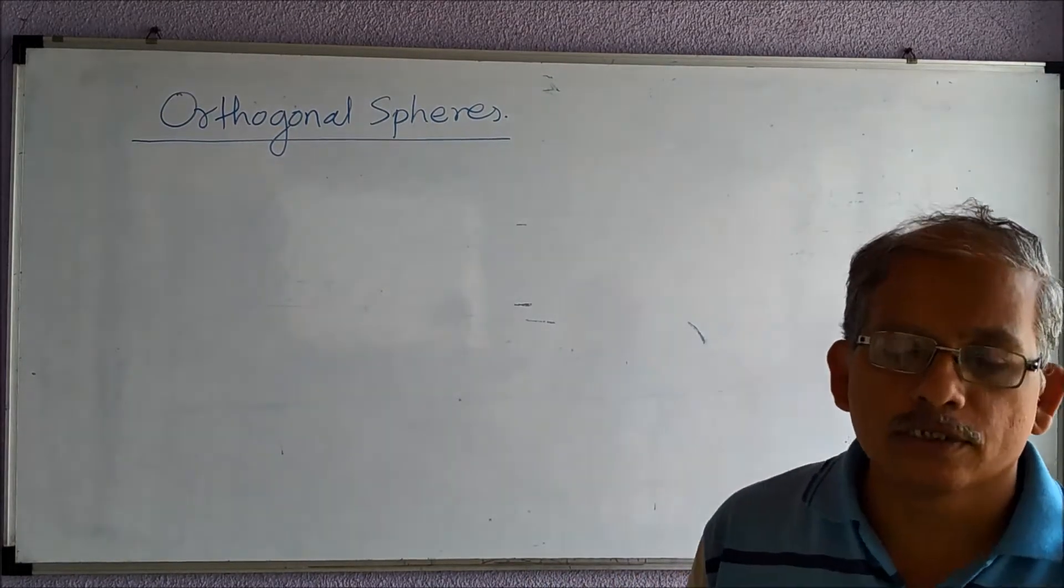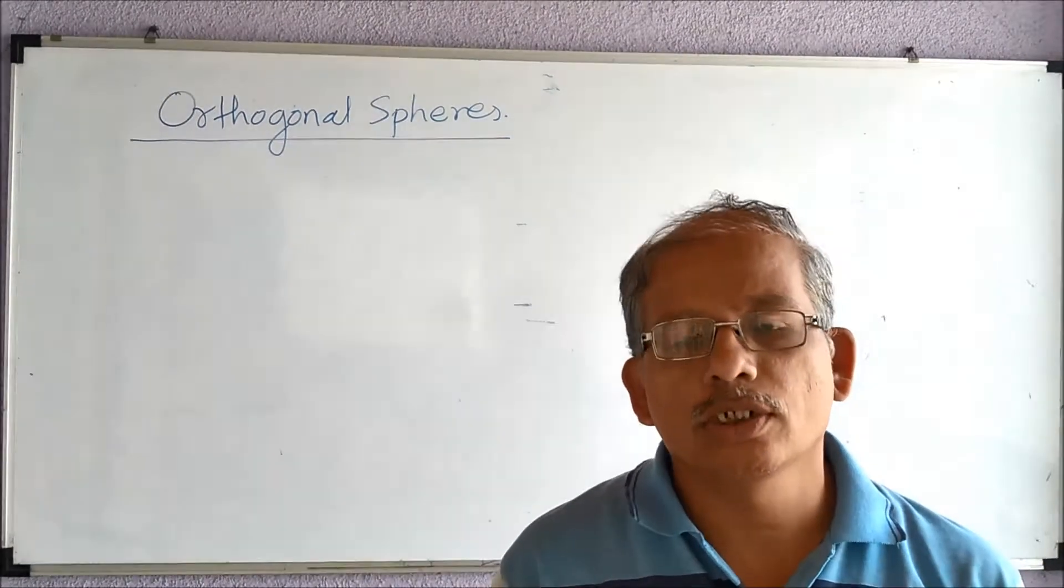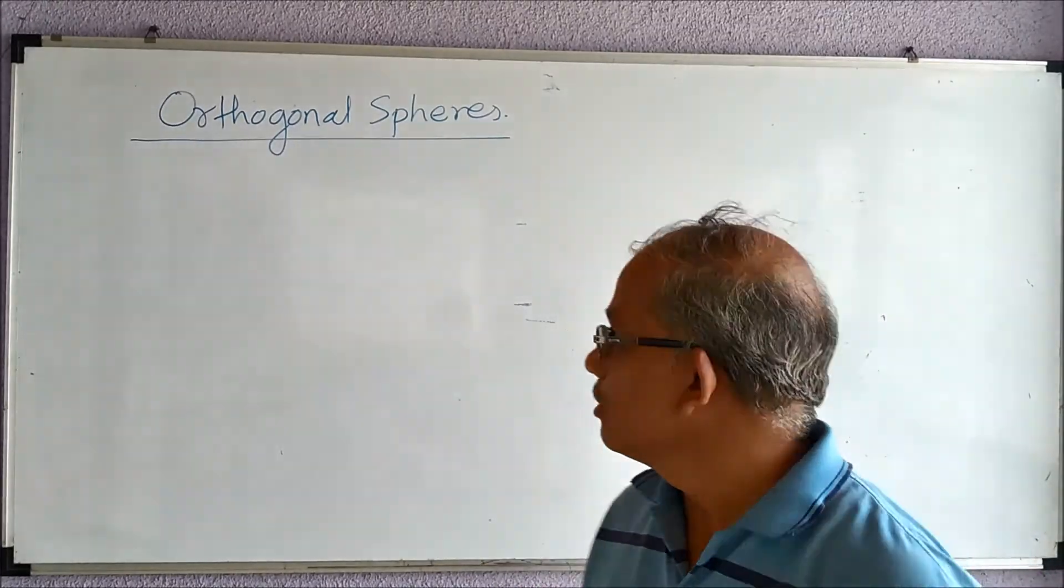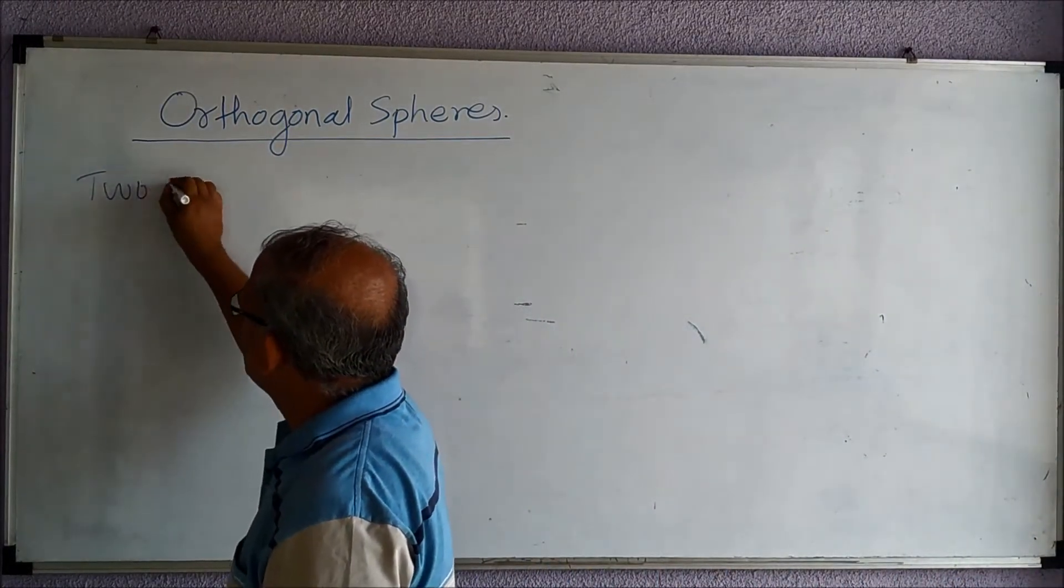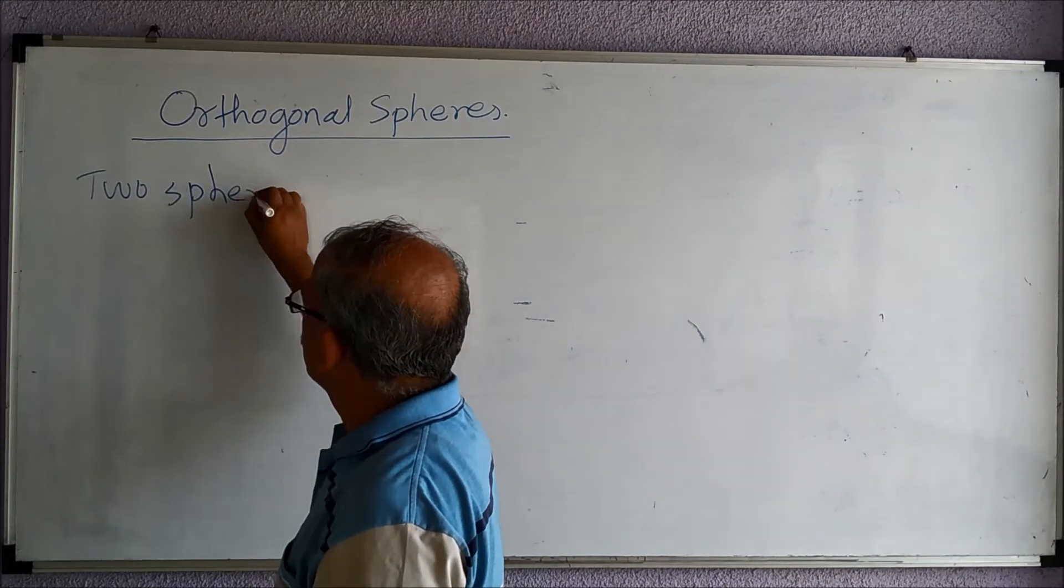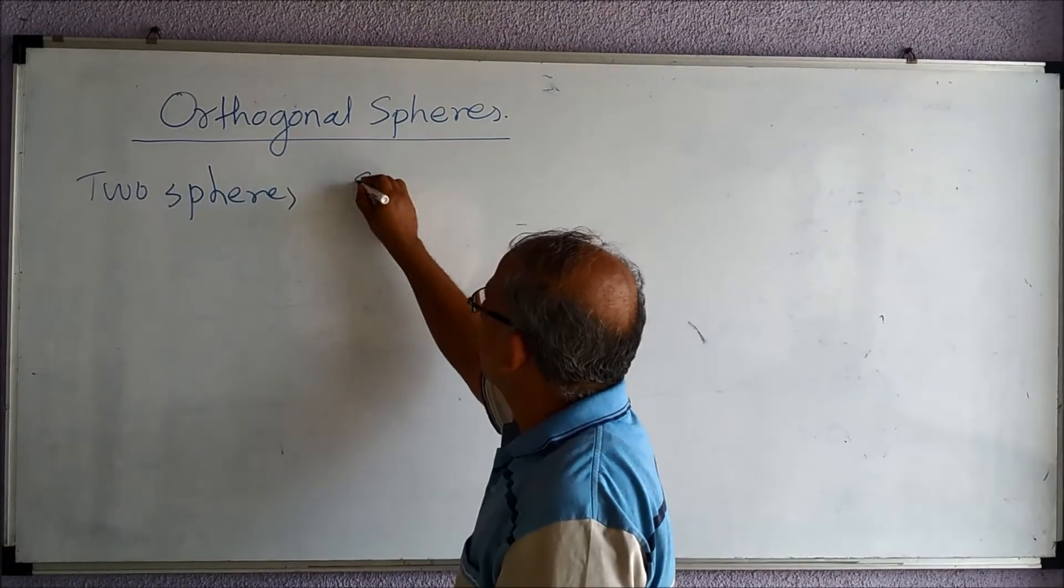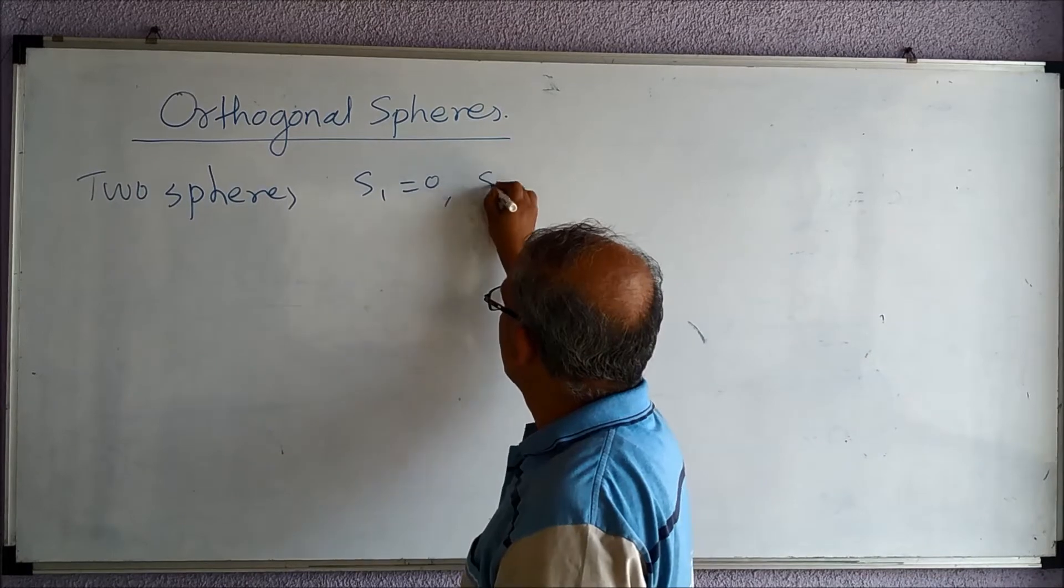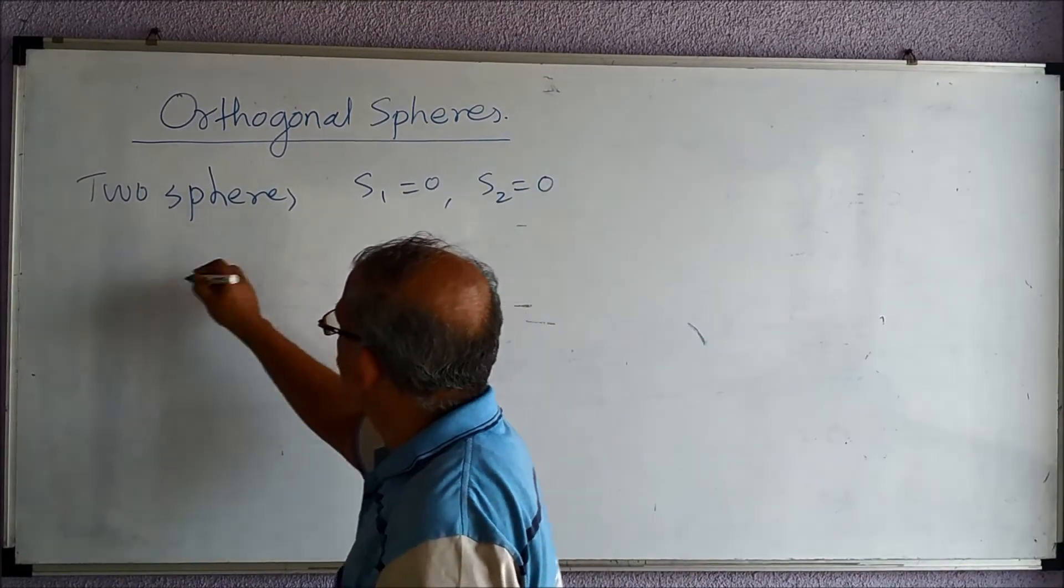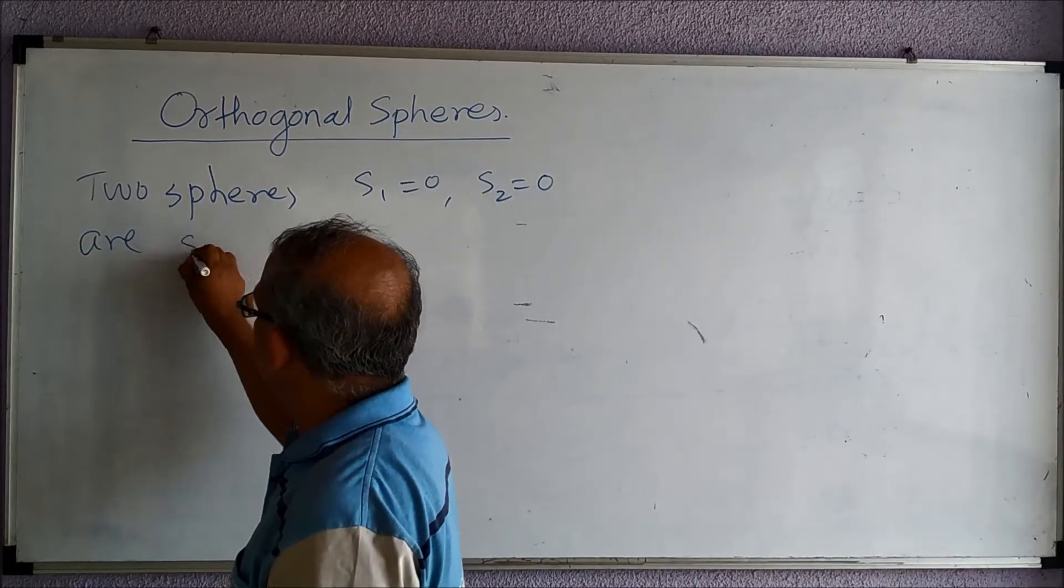Two spheres are said to be orthogonal to each other if certain conditions are met. Two spheres, s1 = 0 and s2 = 0, are said to be orthogonal if...